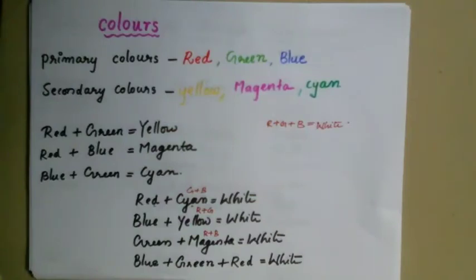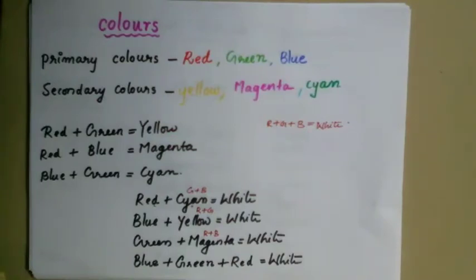Let's look at the color of light and opaque substances. Opaque substances are used in paint, plastic, and ink — these are called pigments. This is the color of light as it relates to pigments used in paint and plastic.